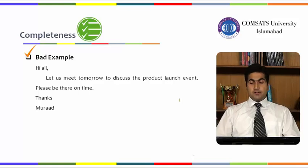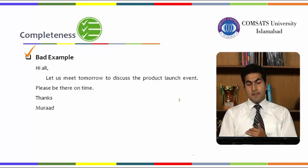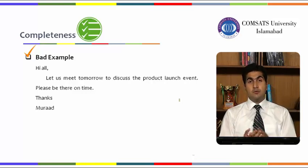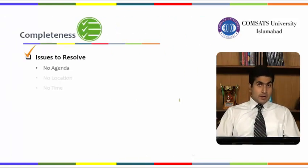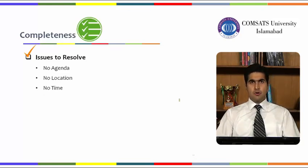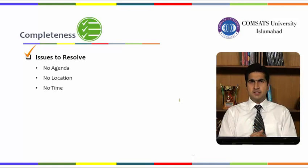Here is a bad example: 'Let us meet tomorrow to discuss the product launch event. Please be there on time.' Even I cannot get an idea regarding time — no specifics about when. Where to meet? To discuss the product launch event — what about it? No references, no details — everything is missing. There is no set agenda, no fixed location, no fixed time, and even the subject 'product launch event — what about it?' So things are clearly missing.